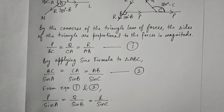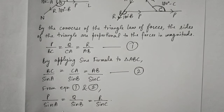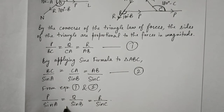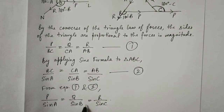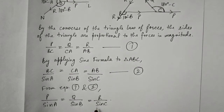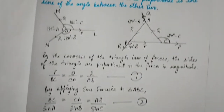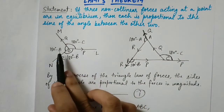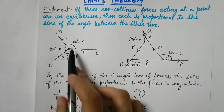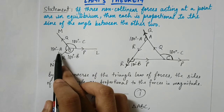We are now very close to proving the theorem. We need to express this as P upon sine of 180 degrees minus A, equals Q upon sine of 180 degrees minus B, equals R upon sine of 180 degrees minus C, because the angle opposite to force P is 180 degrees minus A, which is the angle MON.